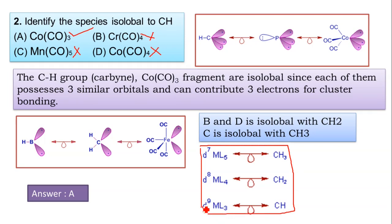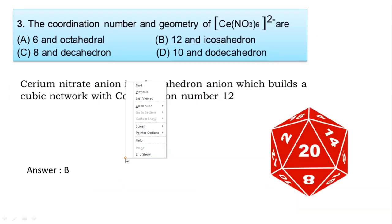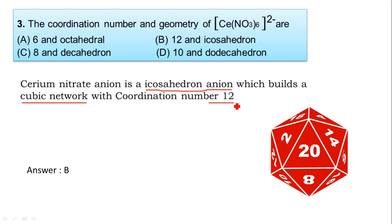Third question: The coordination number and geometry of cerium in Ce(NO3)6 2- complex. This cerium nitrate anion is an icosahedral anion which builds a cubic network with coordination number 12. The coordination number is 12, so option B is correct.